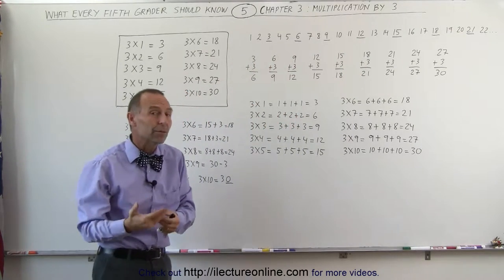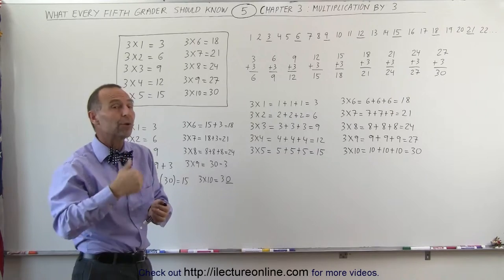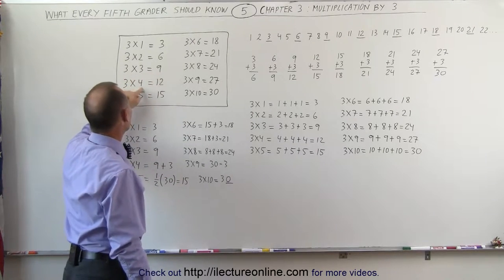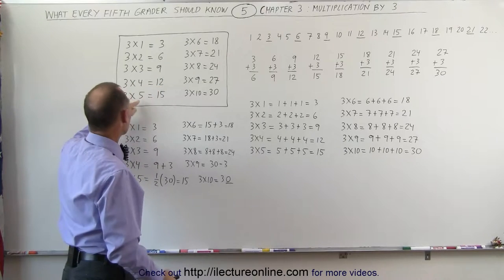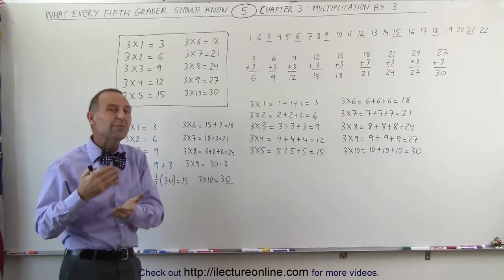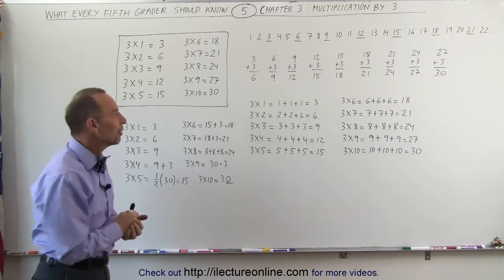Another way of looking at it is, when you multiply, it's always adding 3 to the previous answer. So if you have 3 times 3 being 9, then 3 times 4 is 9 plus 3, which gives you 12. 3 times 5 is the previous answer, 12 plus 3, which gives you 15. It's always 3 more in the next answer compared to the previous answer.